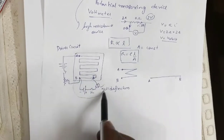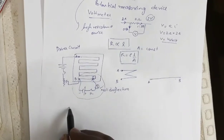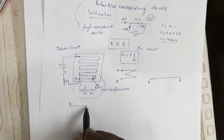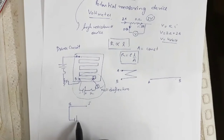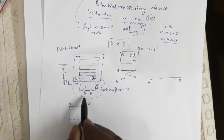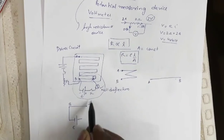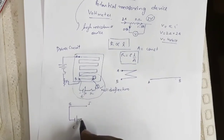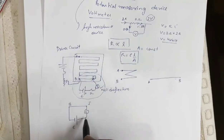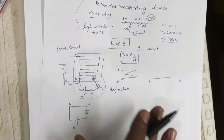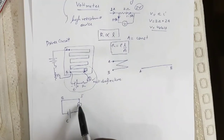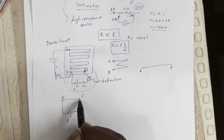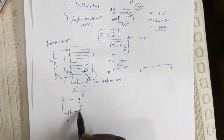Let me draw this part separately. This is point B, this is point J, this is the cell of EMF E, and this is the galvanometer. At this particular position, the galvanometer is showing null deflection. If the galvanometer shows null deflection, that means no current is flowing through this part, which means this point and this point are at the same potential.